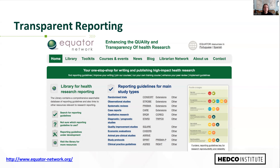Reporting standards tend to be organized as checklists of things to report in your title, abstract, introduction, methods, results, discussion, supplementary materials, and diagrams to capture the flow of participants through your studies. The Equator Network, run out of the University of Oxford, is the largest international initiative providing a living library of reporting guidelines for various study designs—including CONSORT guidelines for randomized trials and PRISMA guidelines for systematic reviews. They also highlight reporting guidelines for other types of studies like qualitative research, and folks register guidelines they're developing with Equator, keeping it current.